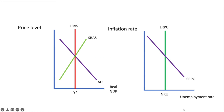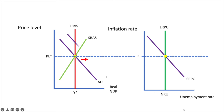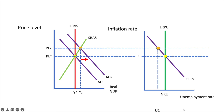Now let's look at an animation that brings it all together. We begin at the natural rate of unemployment, or Y-star on the AD-AS diagram, which corresponds to I1 and the natural rate of unemployment with the original short-run Phillips Curve. When aggregate demand shifts from AD to AD1, output increases from Y-star to Y1, and the price level increases from PL-star to PL-1. On the short-run Phillips Curve, we demonstrate this reduction in unemployment and increase in the inflation rate with point I2 and U1.